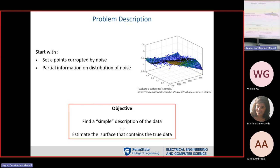The problem is rather simply stated: you have a bunch of points, these points are corrupted by noise, and we want to find the surface that goes through the true points — obviously not the ones corrupted by noise. We usually have tens of thousands or hundreds of thousands of points corrupted perhaps by large amounts of noise, and we'd like to see if we can recuperate the original surface.